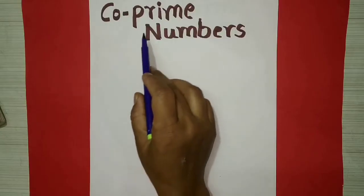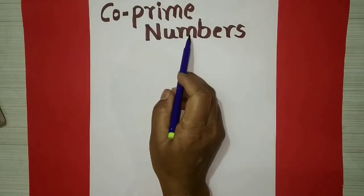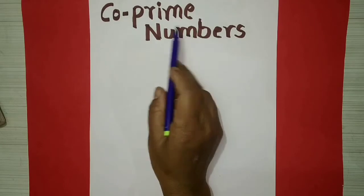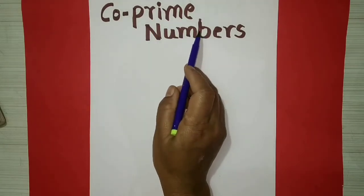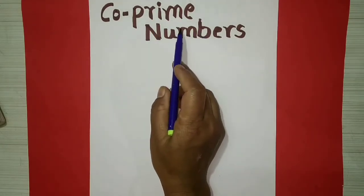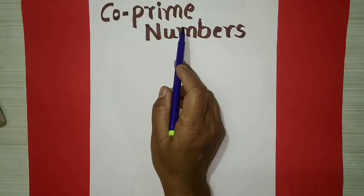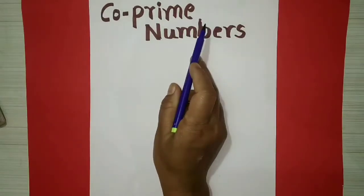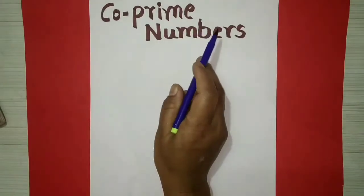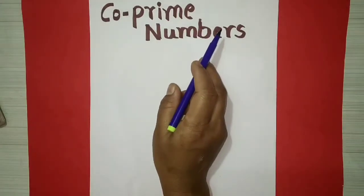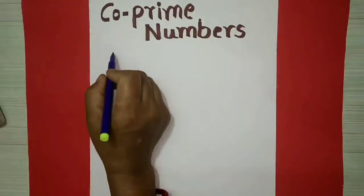Hello Learners. Co-Prime Numbers — first we will see the definition of co-prime numbers. Two numbers which have only one as a common factor are said to be co-prime or relative prime numbers. For example,